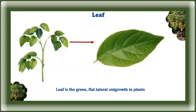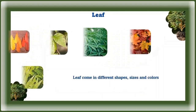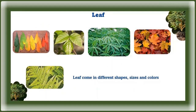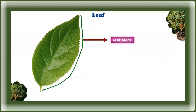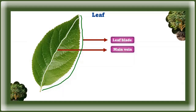Now we're going to look at the leaf. A leaf is a green, flat, lateral outgrowth in plants. Leaves come in different shapes, sizes, and colors, and are generally flattened and thin. The flat part of a leaf is called the leaf blade. In the middle of the leaf blade is a thin tube running from the stem to the tip — this is called the main vein. Smaller tubes running from the main vein are called side veins.